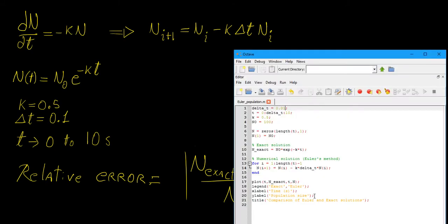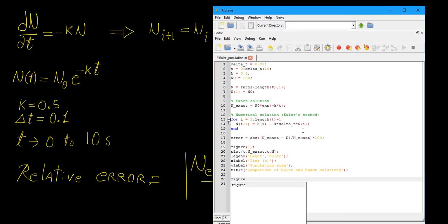So, let's write that into our program here. Let's make another vector, and in this case, let's call it the error. So, this is going to be the absolute value of N exact minus N, and now what we're going to do is, well, we need to make sure that our absolute value has the correct number of brackets, so we're going to divide this by N exact, and let's multiply it by 100. So, now we're going to create another plot, so let's call this figure one, and let's call the other one figure two.